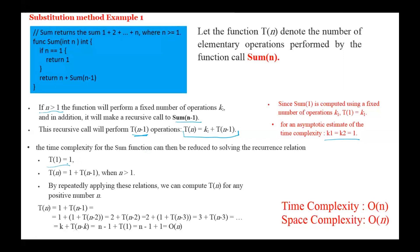For asymptotic estimation, we suppose that k1 equals k2 equals 1. Then the time complexity of the sum function can be reduced to solving the recurrence: T(1) = 1, and T(n) = 1 + T(n-1) if n is greater than 1. Since T(n) = 1 + T(n-1) = 1 + 1 + T(n-2) = 2 + T(n-2) = 3 + T(n-3), and so on. In general, after k operations, T(n) equals k plus T(n-k), which equals n minus 1 plus T(1). Since T(1) equals 1, this equals n.